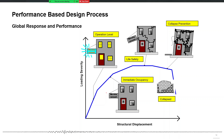For initial design, we will use phi and load factors and everything. But for performance-based design, we are explicitly accounting for non-linearity, so there is no need for all those code factors. One thing to note is that in performance-based design, we actually increase strength — we use expected material strengths which are more than the nominal strength values, rather than reducing them.